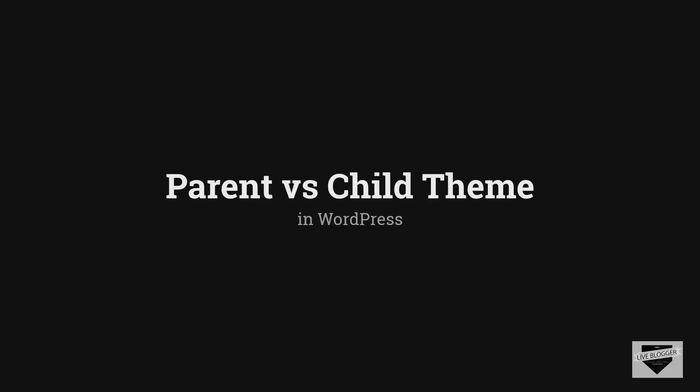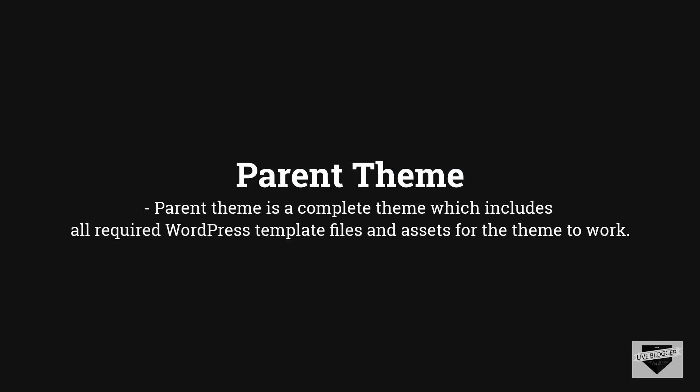Hi everyone, welcome to Live Blogger. In this video we will see what parent and child themes are in WordPress, and how to create a child theme. A parent theme is basically a complete theme which includes all the required WordPress template files and assets for the theme to work. Any WordPress theme which is not a child theme can technically be called a parent theme, but not every theme is recommended to be used as a parent theme. The parent theme is standalone and not dependent on any other theme.